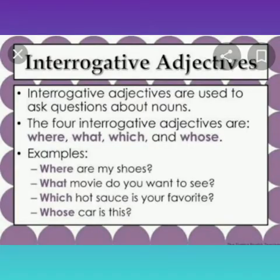Interrogative adjectives are used to ask questions about nouns. The four interrogative adjectives are where, what, which, and whose. For example: Where are my shoes? What movie do you want to see? Which hot sauce is your favorite? Whose car is this?